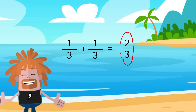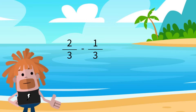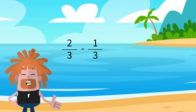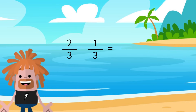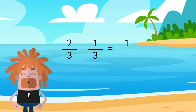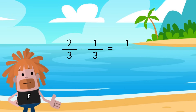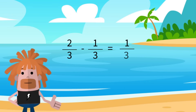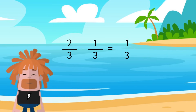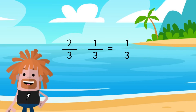Let's try and subtract an example: 2 thirds minus 1 third. 2 minus 1 is 1, so our numerator is 1. Now we are just going to write back our denominator, 3. The answer is 1 third.